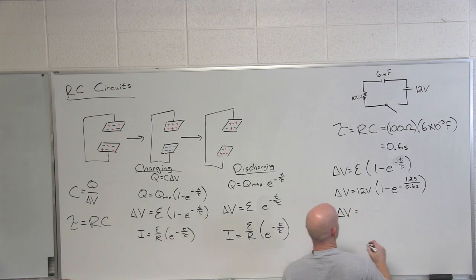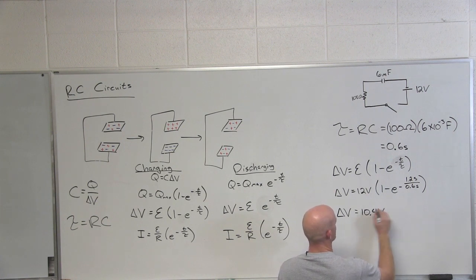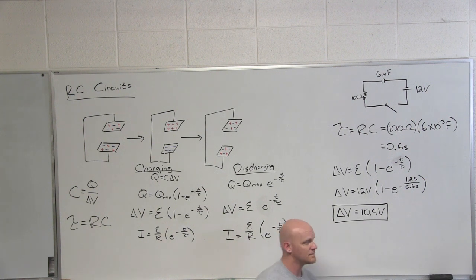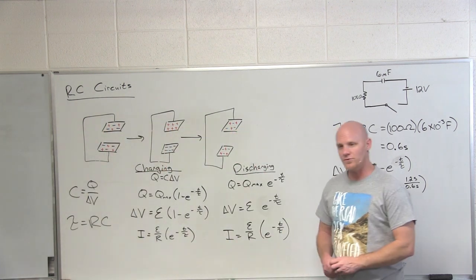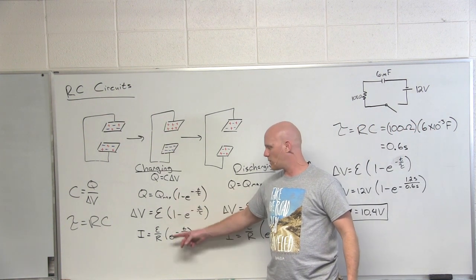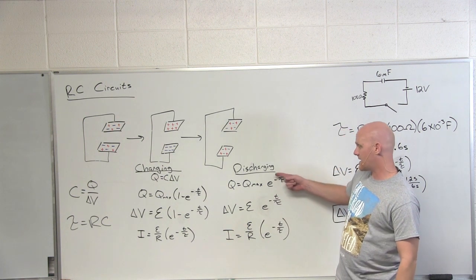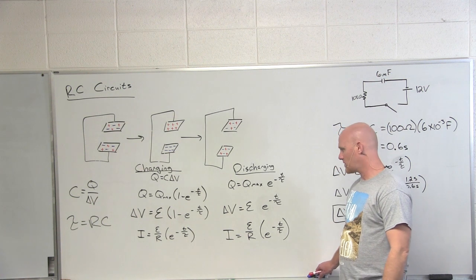So 1 minus E to the negative 1.2 seconds over 0.6 seconds. And who's got a calculator handy? I'll round that to 10.4 volts. So the graphs we had up here though I would go through and really understand you know is this building up or winding down as current is or in the case of discharge is everything winding down?